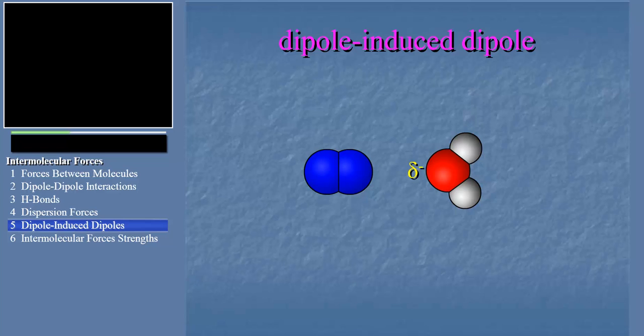Clearly, the dipole of water can induce a dipole in the nitrogen molecule like this. And when it does, an attraction occurs, doesn't it?